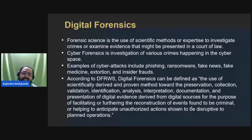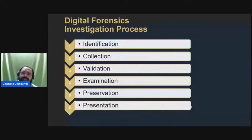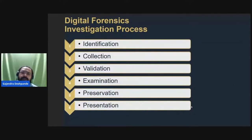There are basically six steps in digital forensics investigation: identification, collection, validation, examination, preservation, and presentation. In the identification step, the investigation officer visits the crime location and identifies different objects that may contain evidence. These objects may include laptops, mobile phones, smart gadgets, smart watches, cables, and even toy pen drives.